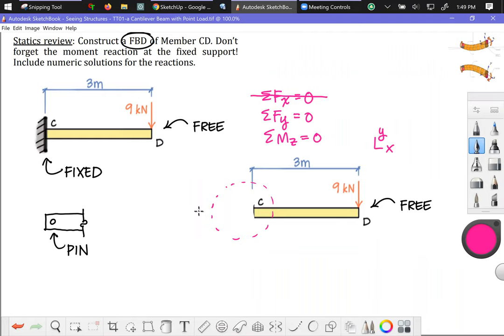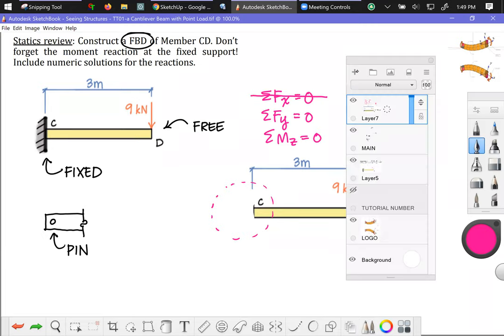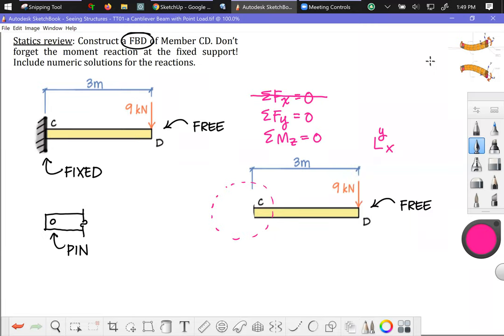And by inspection, we can kind of conclude that we don't need an x direction reaction over at C. And I know in statics, you may have been inclined to kind of write this out and you'd be like this is C sub x and then eventually conclude that it is equal to zero. You're a little more sophisticated now. So you don't need to show those zero vectors if it is clear from inspection that they're equal to zero.